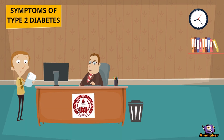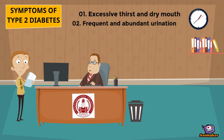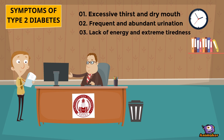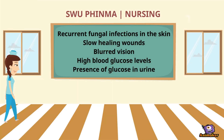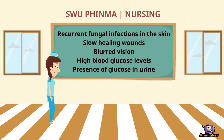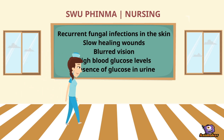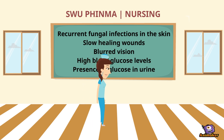Symptoms of type 2 diabetes include excess thirst and dry mouth, frequent abundant urination, lack of energy and extreme tiredness, tingling or numbness in the hands and feet, recurrent fungal infections in the skin, slow healing wounds, blurred vision, high blood glucose levels, and presence of glucose in the urine.